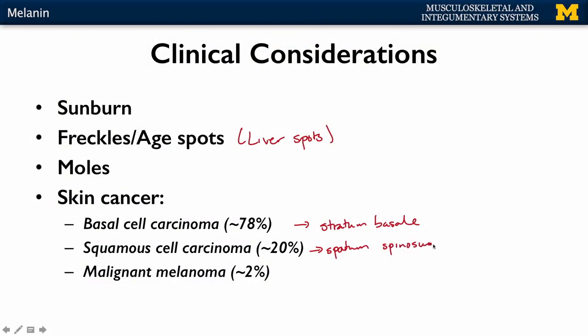Malignant melanomas originate in melanocytes, as the name indicates. Malignant means this type of cancer will spread to different areas. Due to the fact that it is malignant, it has a higher incidence of mortality.